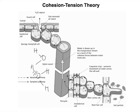That means when one water molecule is pulled out of the xylem by osmosis in the leaf, it pulls all the other water molecules behind it up through the xylem, creating a tension inside the xylem that draws water up.